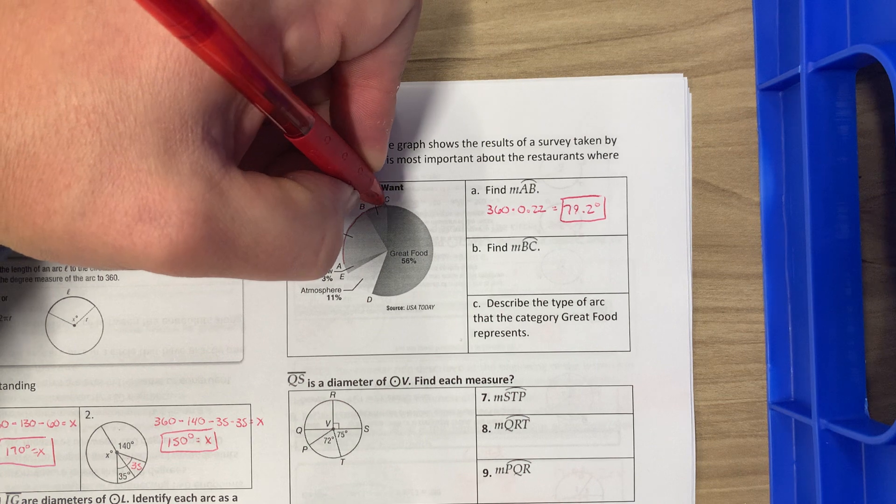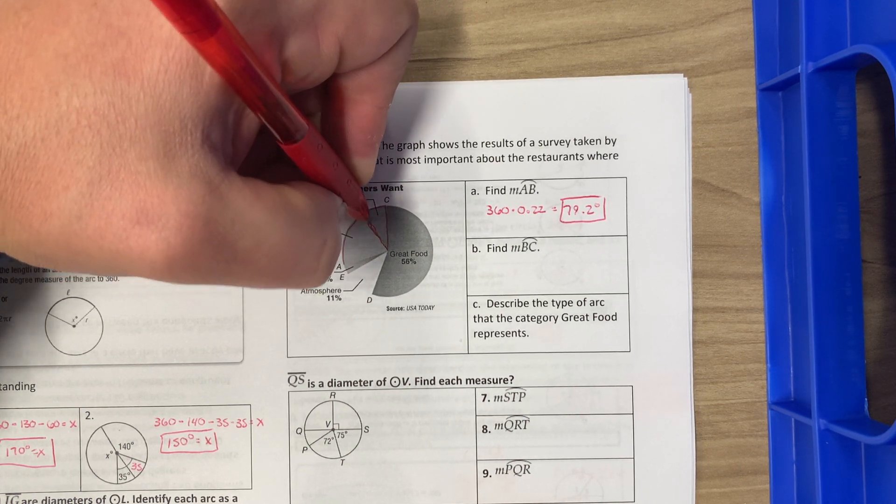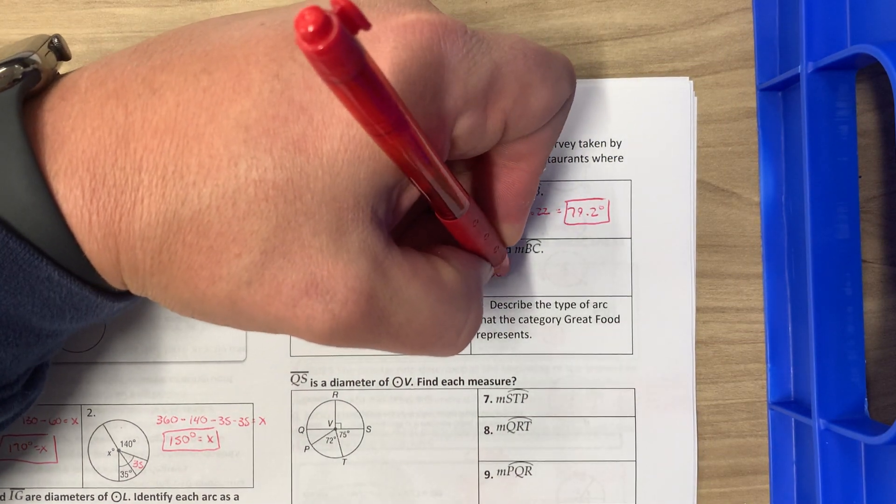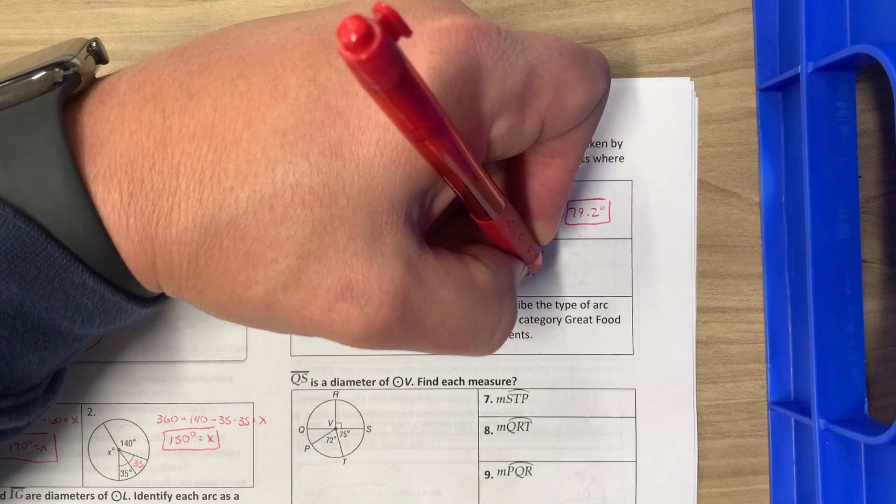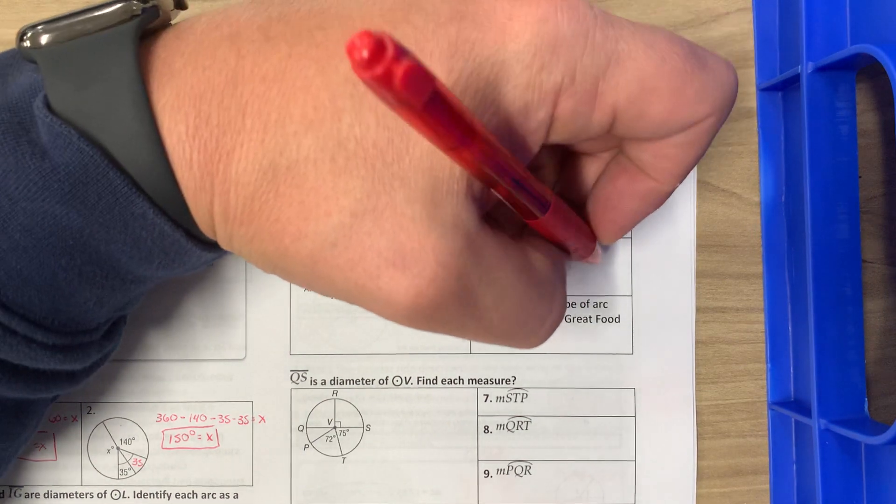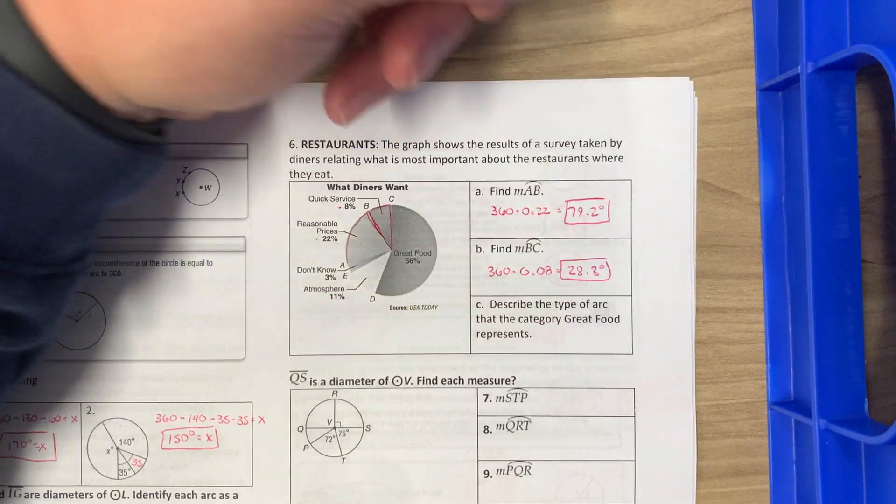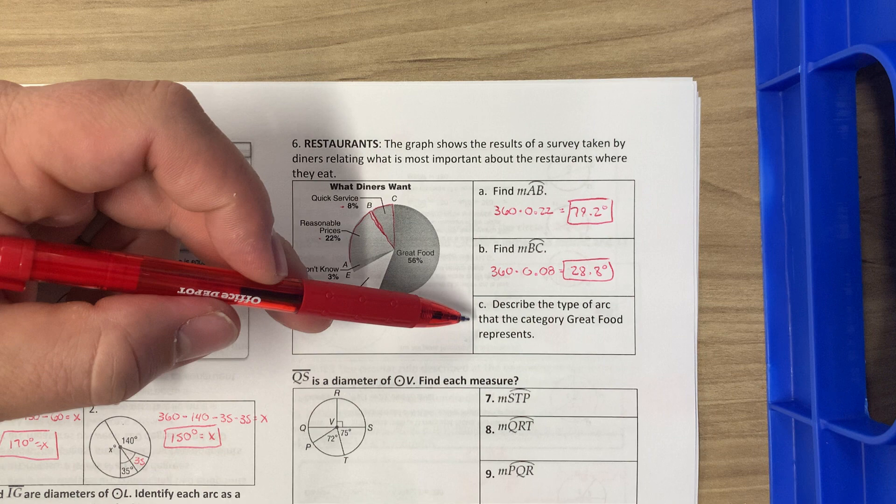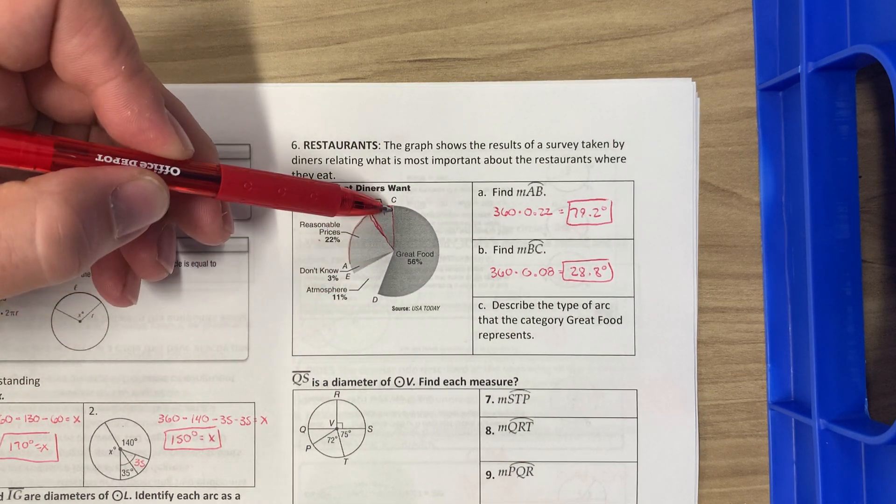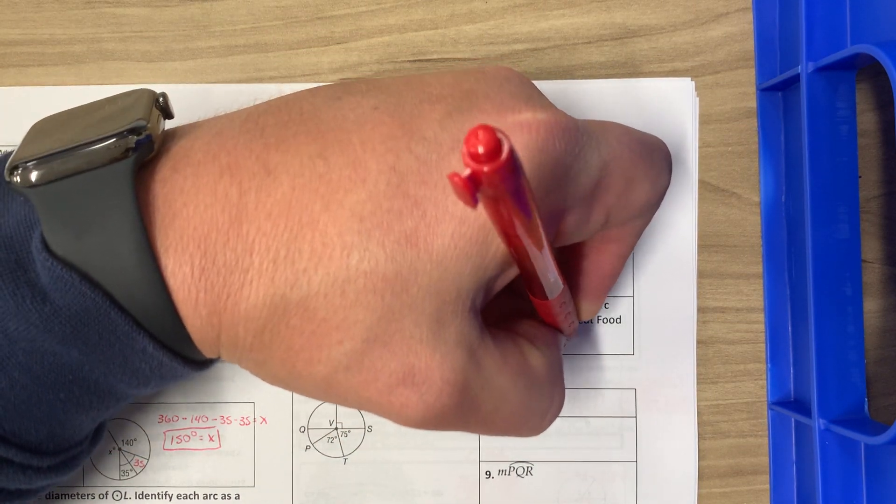BC is this guy right here. BC is right here. It is 8%, so I do 360 times 0.08 or 8%, and that is 28.8 degrees. And then describe the type of arc that the category great food represents. Great food is all this, so that is going to be a major arc because it is larger than 180.